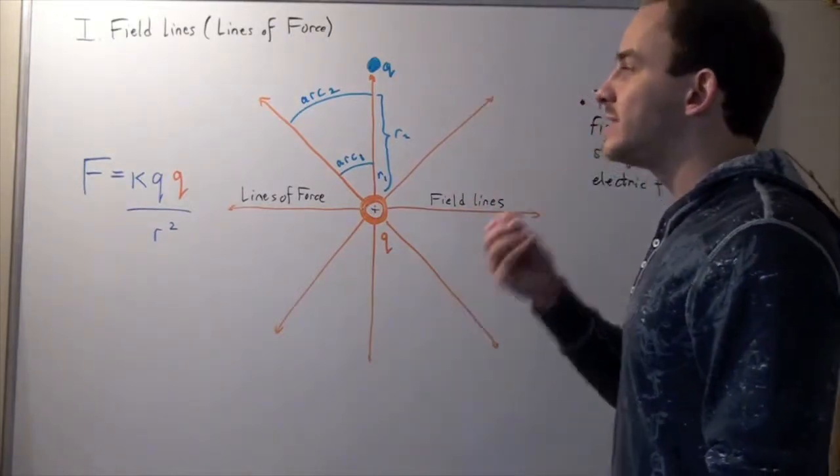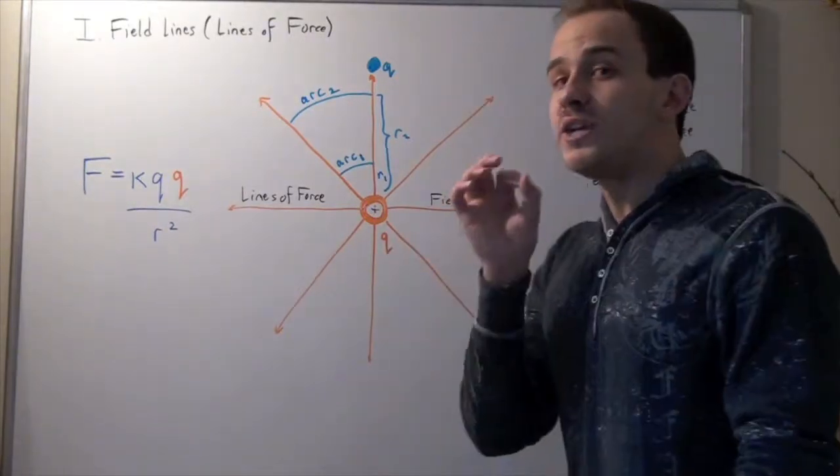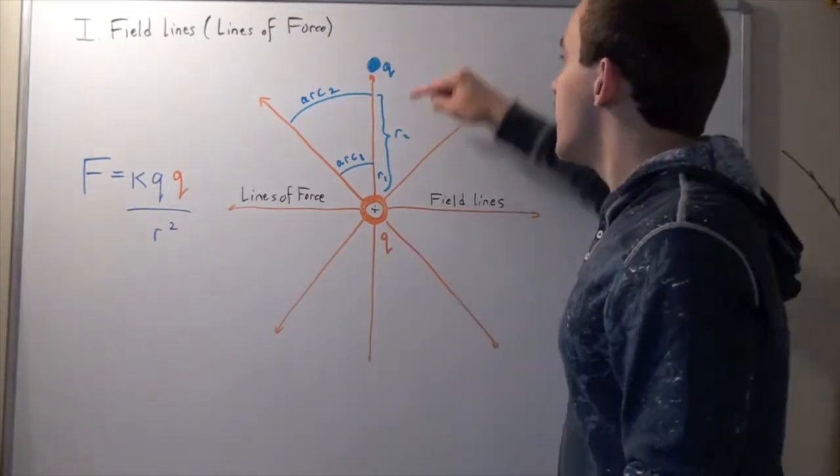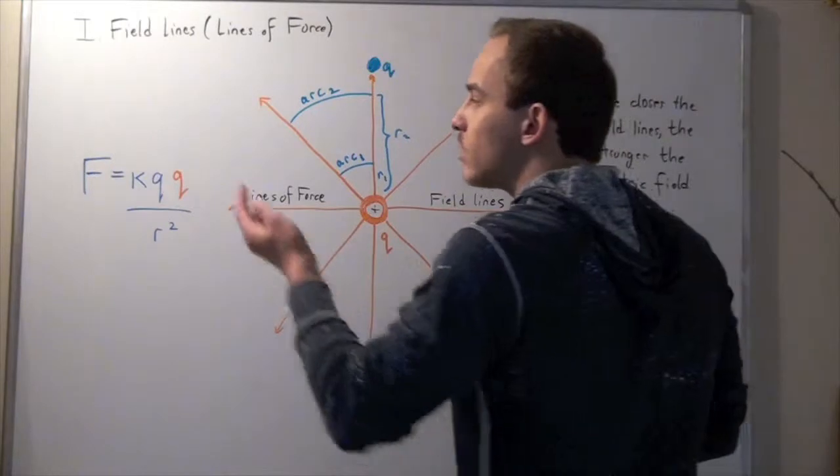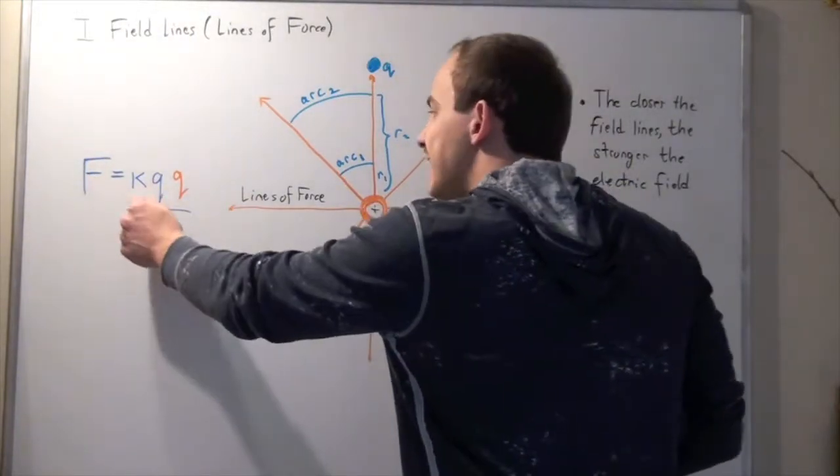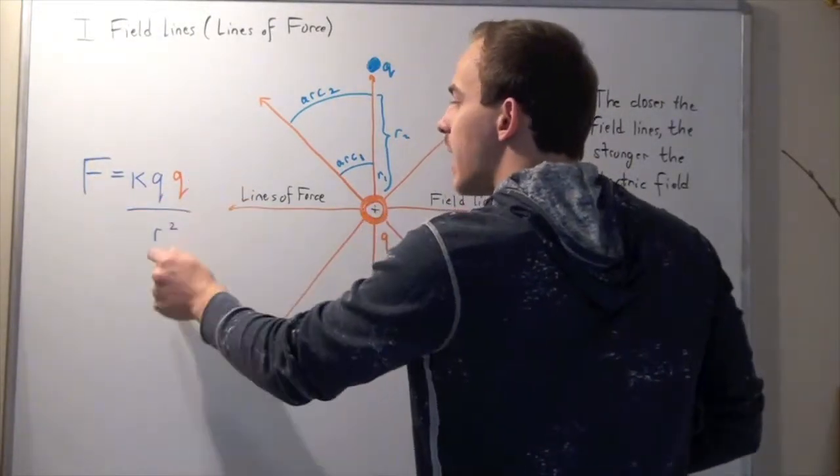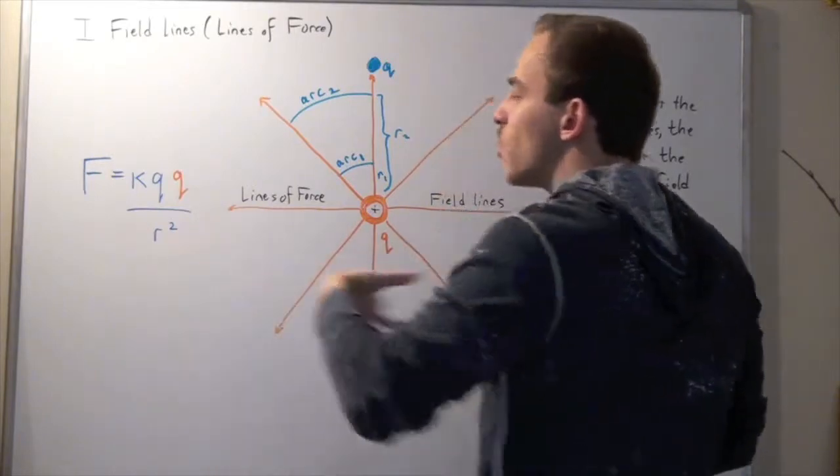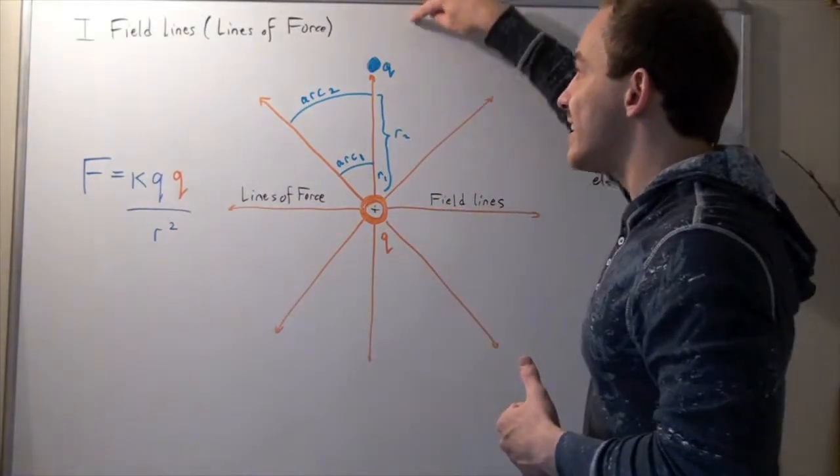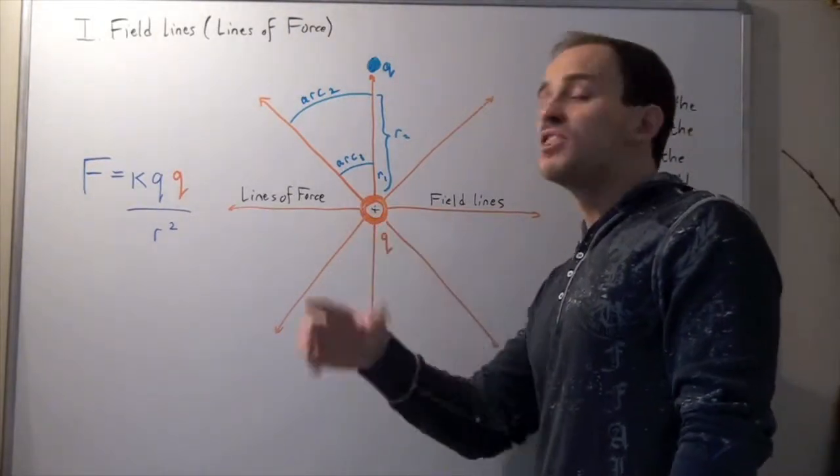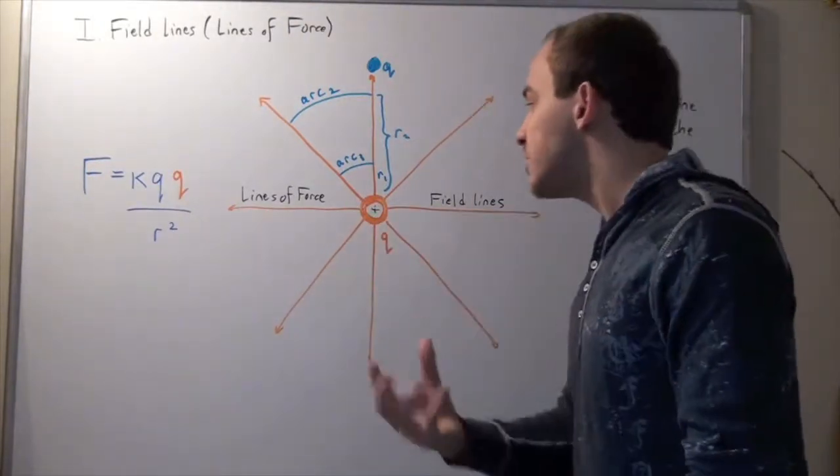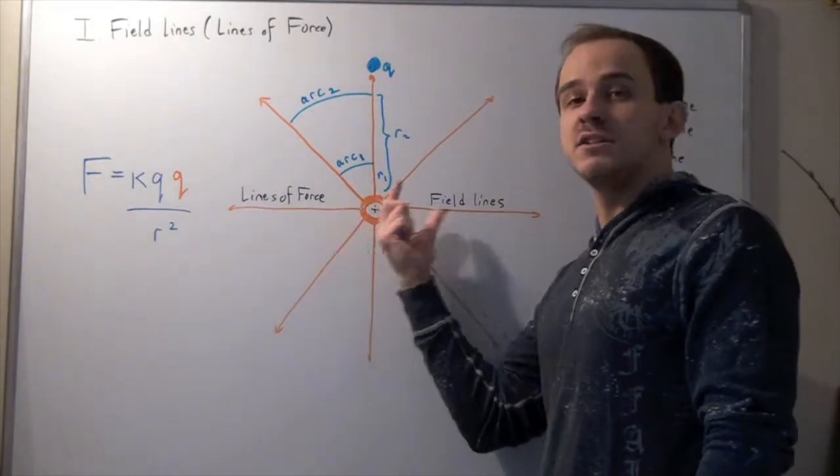And we said that to find our electric field created by this charge, we simply divide by this charge. And this charge would cancel and we'll get our electric field is equal to K times this Q divided by R squared. So in other words, this charge has nothing to do with the electric field that this creates, with the magnitude or the direction of what this electric field is.